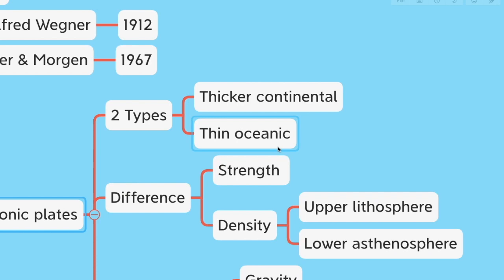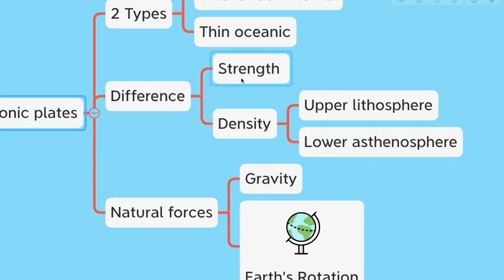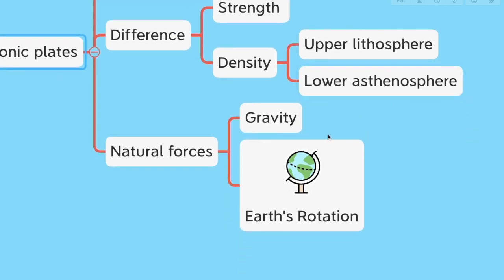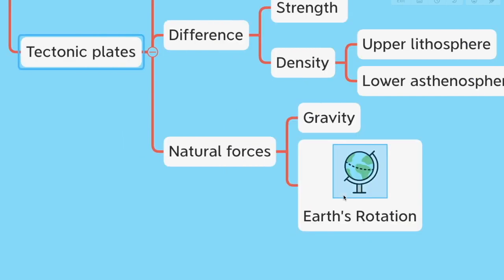The minor plates include the Arabian, Nazca, and Philippine plates. Tectonic plates are of two types: thicker continental and thin oceanic. The difference in strength and density between the upper lithosphere and the lower asthenosphere — which is the upper layer of the Earth's mantle below the lithosphere — allows tectonic plates to move. Other natural forces such as gravity and Earth's rotation also contribute. The plates move at speeds ranging from two to ten centimeters per year.